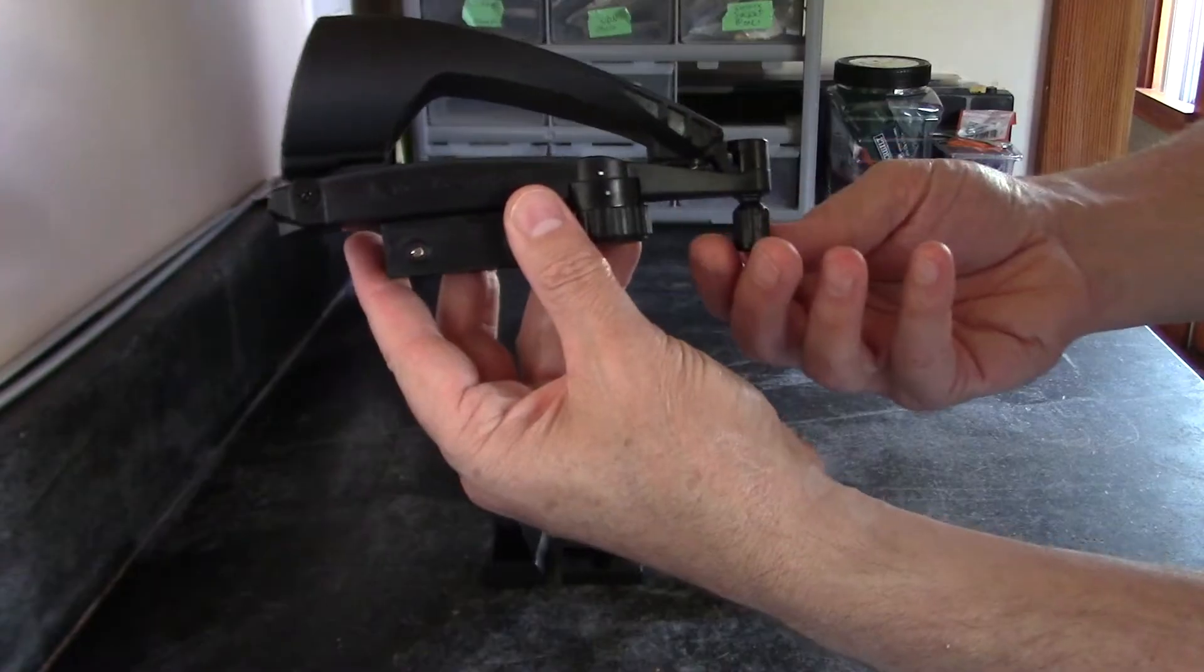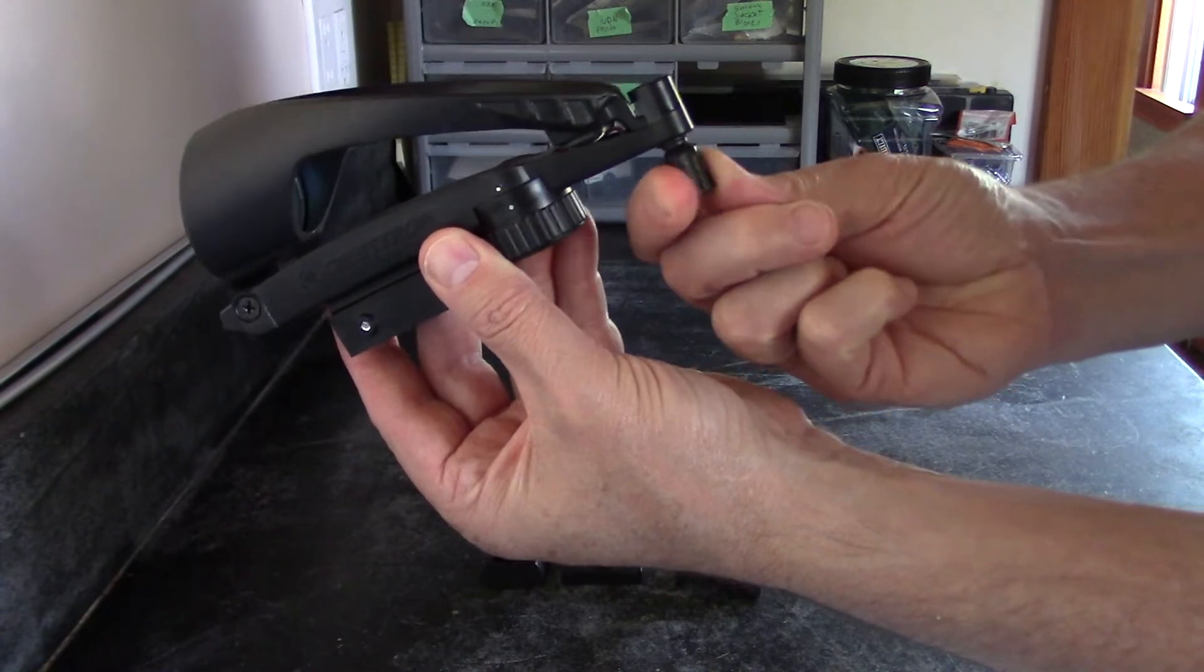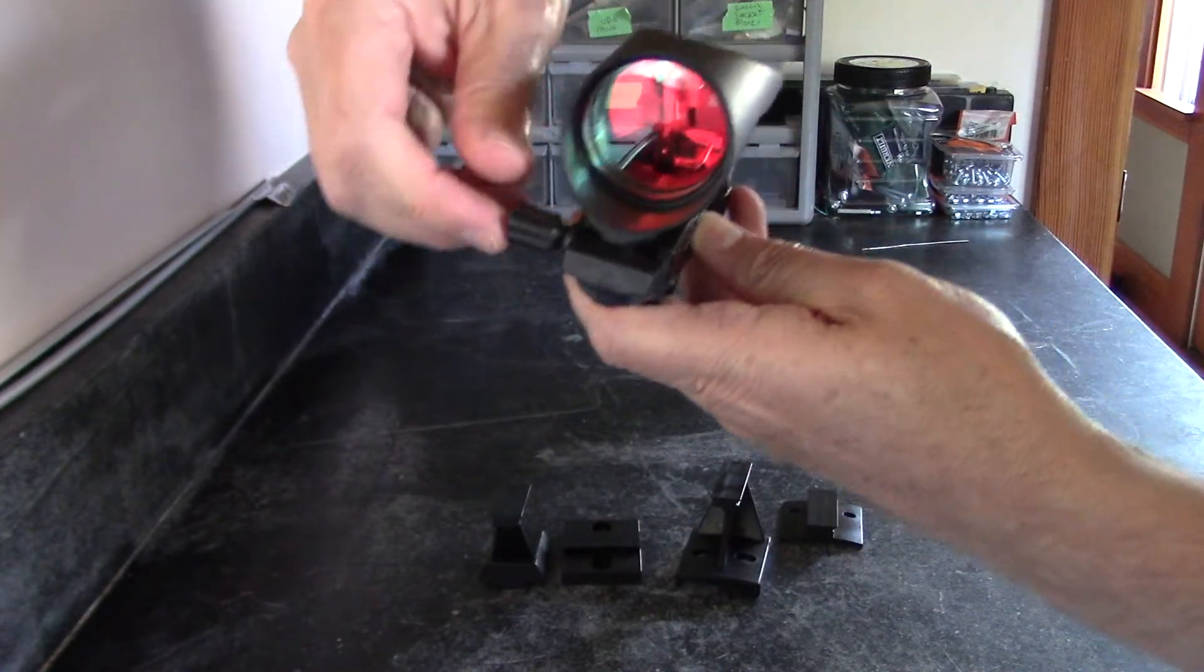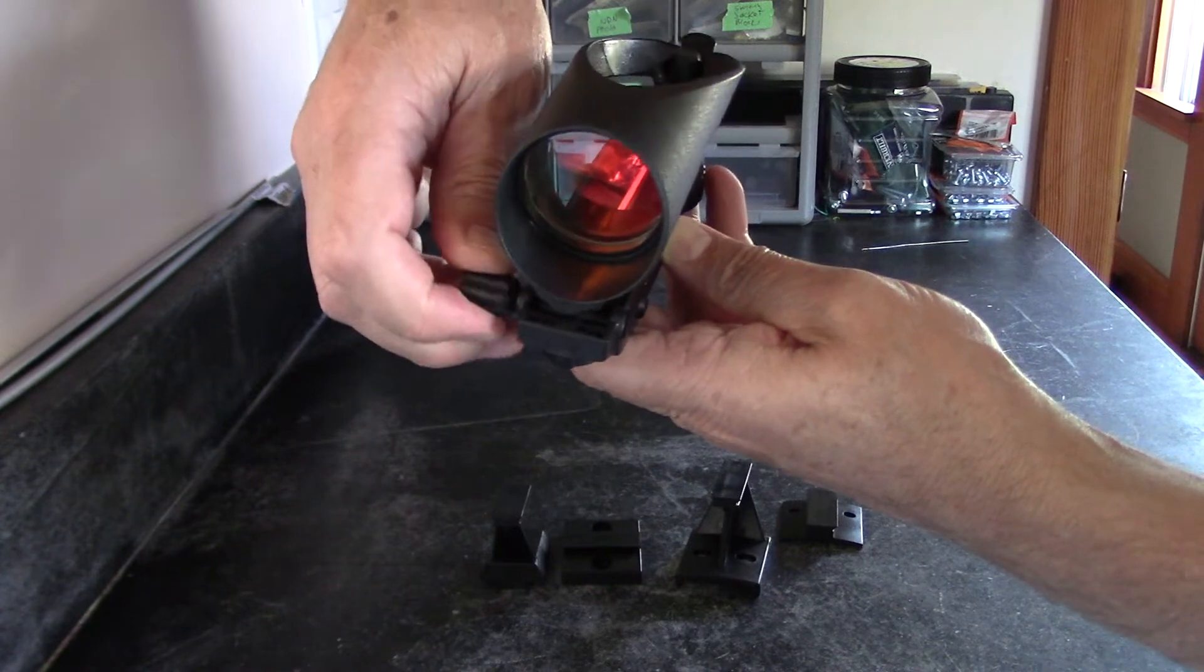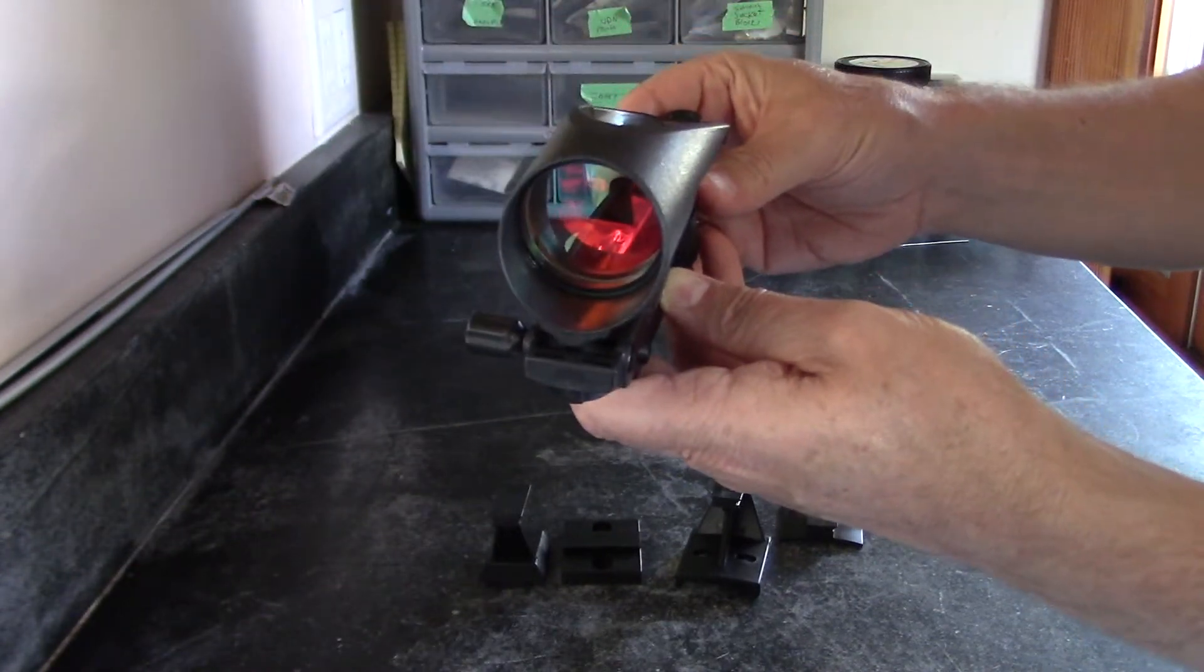The Finder Scope has an up and down adjustment, and that's the screw in the back right here. And it has a left and a right adjustment right here. So you can precisely align it with the actual image that you see.